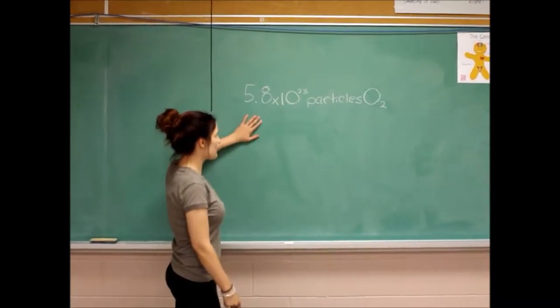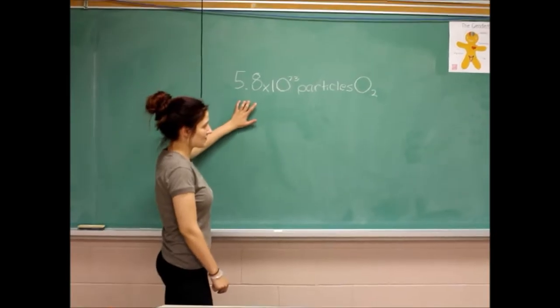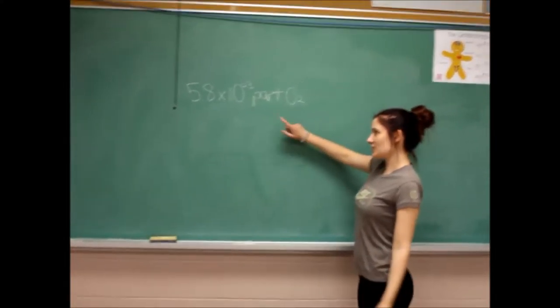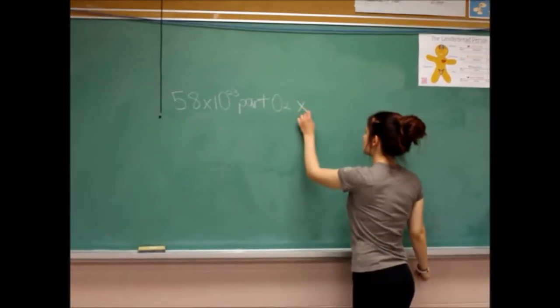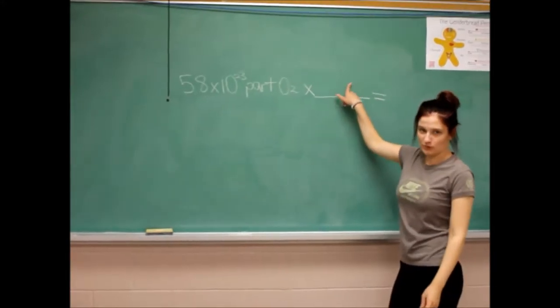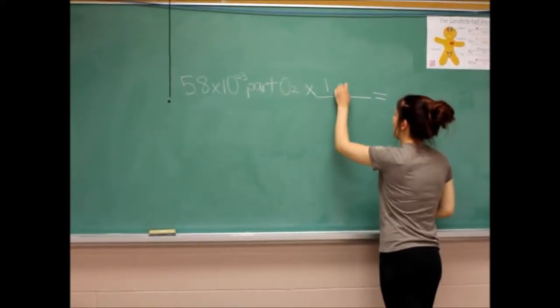So now we're gonna change 5.8 times 10 to the 23 particles of O2 into moles. So first we take the equation, and then we do a times, and then a line, and an equal sign. So on top, you want to put what you're trying to find, which is moles. So one mole.